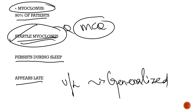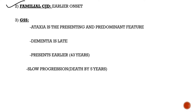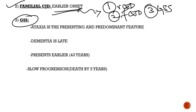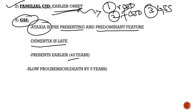Familial CJD is similar to sporadic CJD but with an earlier age of onset. GSS is a prion disease that predominantly affects the cerebellum, with amyloid angiopathy affecting the cerebellum. The presenting and predominant feature is cerebellar ataxia, while dementia occurs late. The age of onset is earlier than sporadic CJD, and disease progression is slower — death occurs around five years, compared to six to twelve months in CJD.